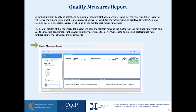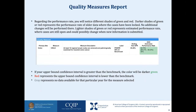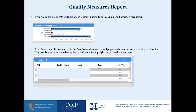The default display is a table view showing primary site, measure group, and measure description. In the label column you will see the performance rate, expected performance rate, confidence interval, and benchmarks. Darker shades of green or red represent performance rates of older locked data, while lighter shades represent estimated performance rates where cases are still open. If your upper bound confidence interval is greater than the benchmark, the color will be darker green; red represents that the upper bound confidence interval is lower than the benchmark; gray represents no data available. If you click on the EPR, data will populate showing measure eligibility by case count, and clicking on a bar in the case count will populate the associated case list.